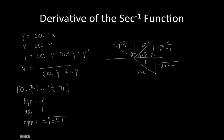So now using our two possible triangles, we're going to try to rewrite secant y tan y. So in our first scenario, where x is greater than 0, our secant y would equal x and our tan y would equal x squared minus 1, and this is for x greater than 0.